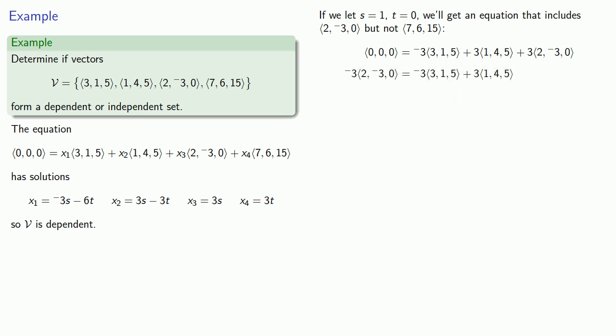And so we find that (2, -3, 0) is equal to (3, 1, 5) plus negative one times (1, 4, 5).